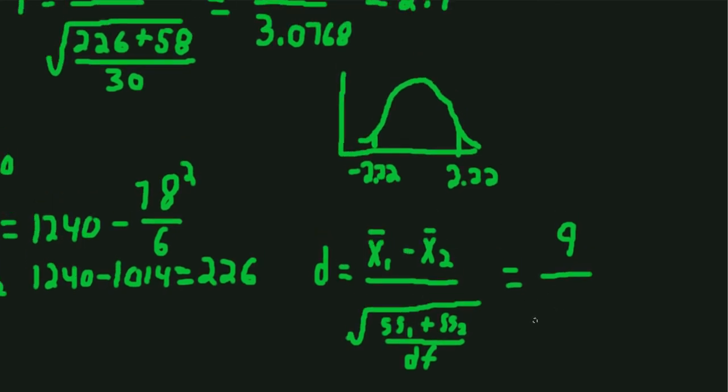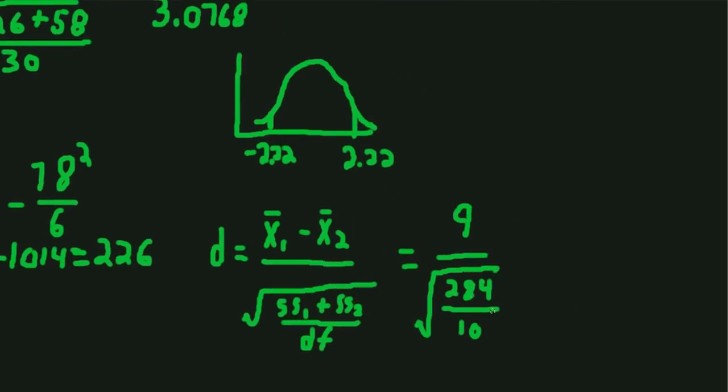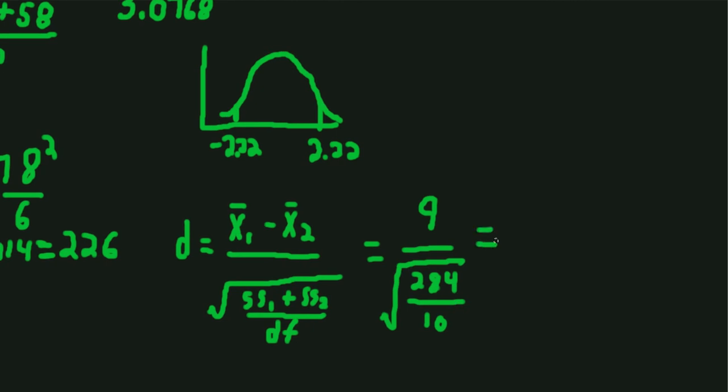Which is 226 plus 58, which gives us 284. 284 divided by 10, which are our degrees of freedom, and then we take the square root of that to get the Cohen's D value for this comparison. 284 divided by 10, take the square root, we get 5.329, so 9 divided by 5.329, and we get 1.69.